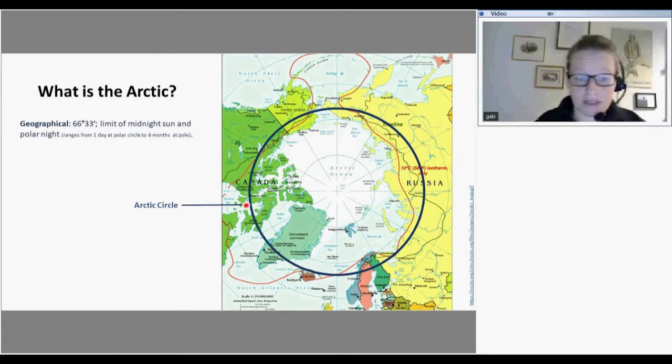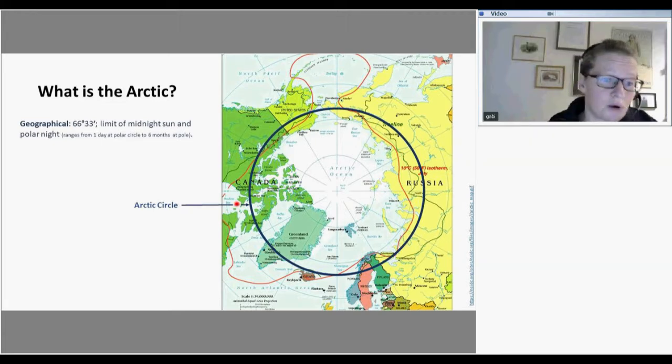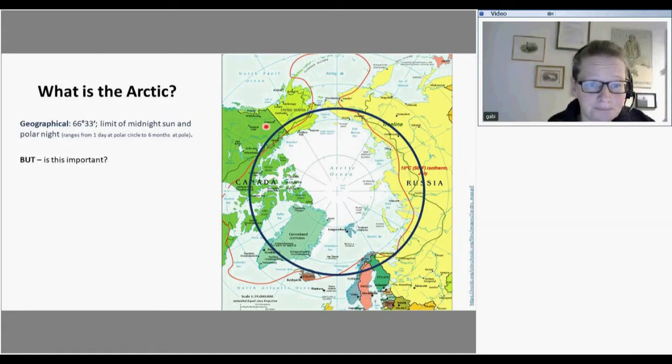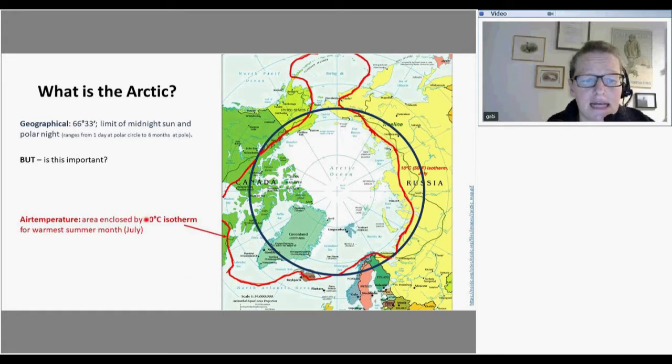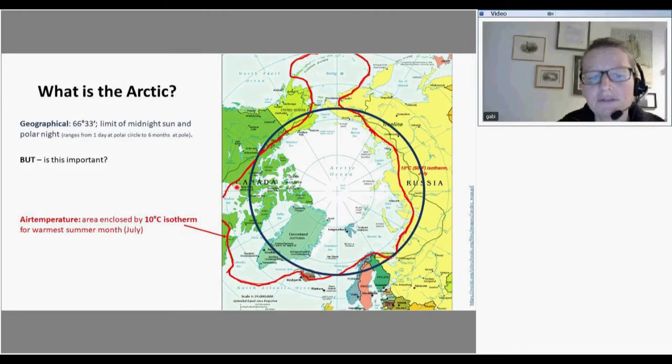We can find a very geographical definition. The Arctic is geographically plainly defined as the area above the Arctic Circle and that is about 66 degrees north. That is the limit of the midnight Sun and the polar nights directly on the Arctic Circle. This is where we have at least one day when the sun doesn't set or doesn't rise. But that doesn't mean very much really.